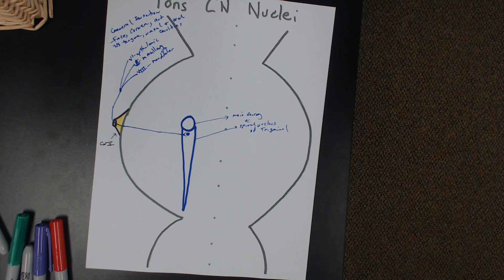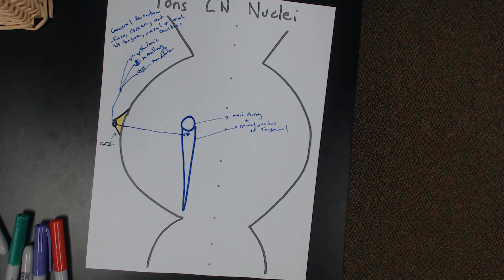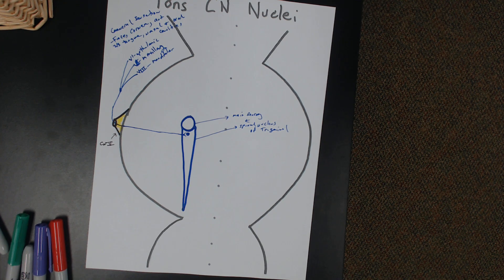Is that face sensation divided into those different areas? So that would all be considered the face? Yeah, there are three different nerves that branch off. Trigeminal is a huge nerve.